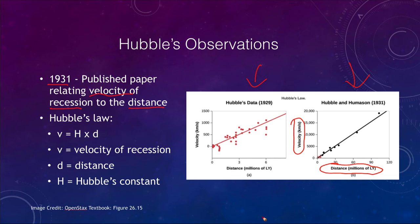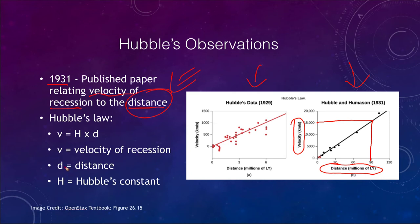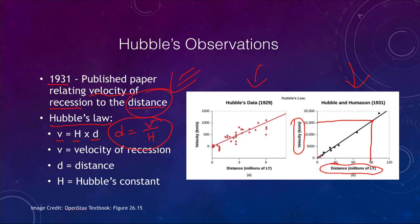This was very important because it became another way to determine distance. Velocity is very easy to measure, and once you measure the velocity you can find the distance using this graph. The better we can determine this line, the more useful it becomes as a method of determining distances in astronomy — working out to the very edge of the universe. This gave us what is now known as Hubble's law: velocity equals a constant times the distance, or distance equals velocity divided by Hubble's constant.